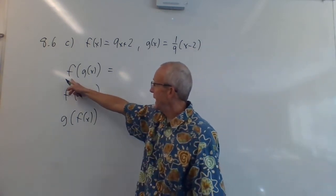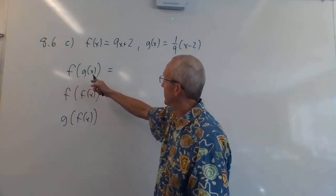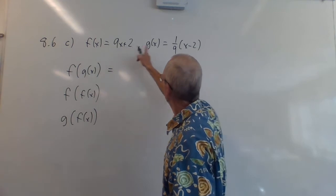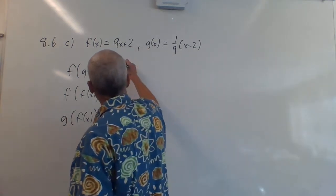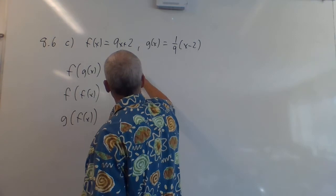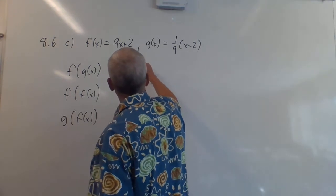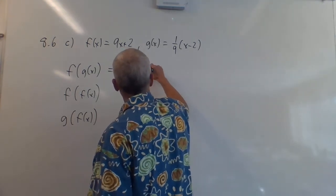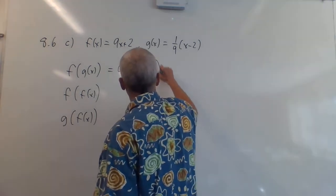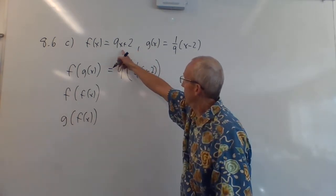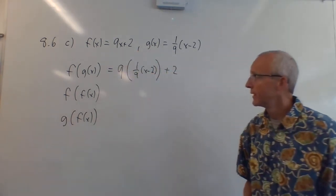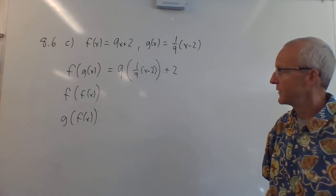First you want f of g of x. You take f of x, and everywhere there's an x, you plug g(x) in. So you say 9, there's an x, we plug that in, put a big parenthesis: 1/9x minus 2. That's the x part. And then you go plus 2 — there's no x there, so you just write that. Okay, that's f of g of x.